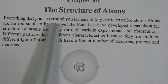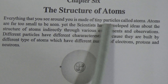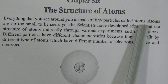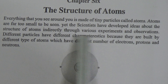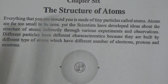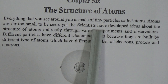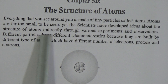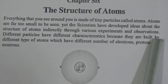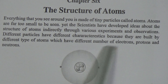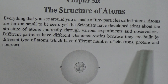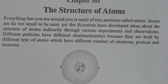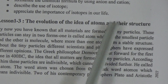This is Chapter 6: The Structure of Atoms. Everything that you see around you is made up of tiny particles called atoms. We are given the definition of atom. We know that everything around us is made up of tiny particles and we call this atom. Atoms are far too small to be seen, yet scientists have developed ideas about the structure of atom indirectly through various experiments and observations. Different particles have different characteristics because they are built by different types of atoms which have different numbers of electrons, protons and neutrons. Now we will discuss about the evolution of the idea of atoms and their structure.